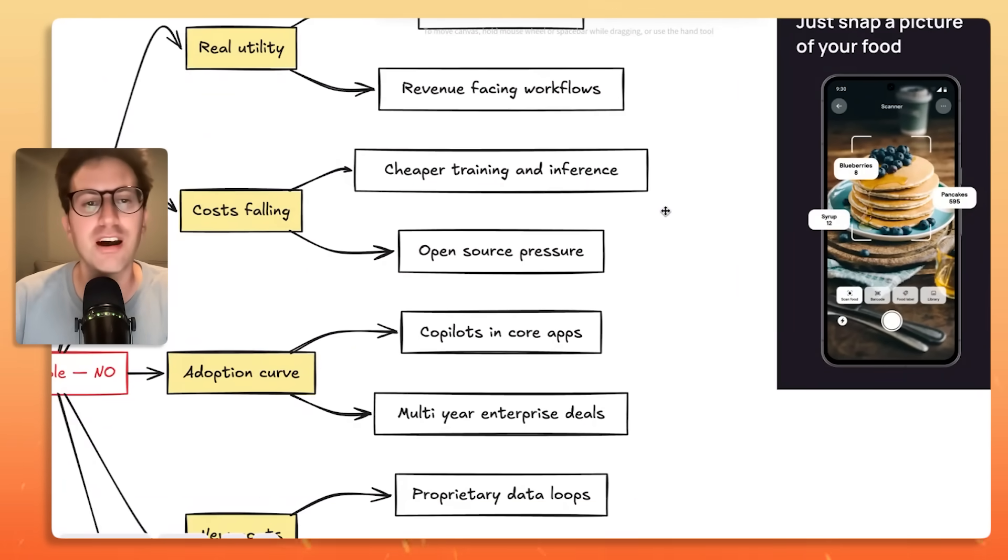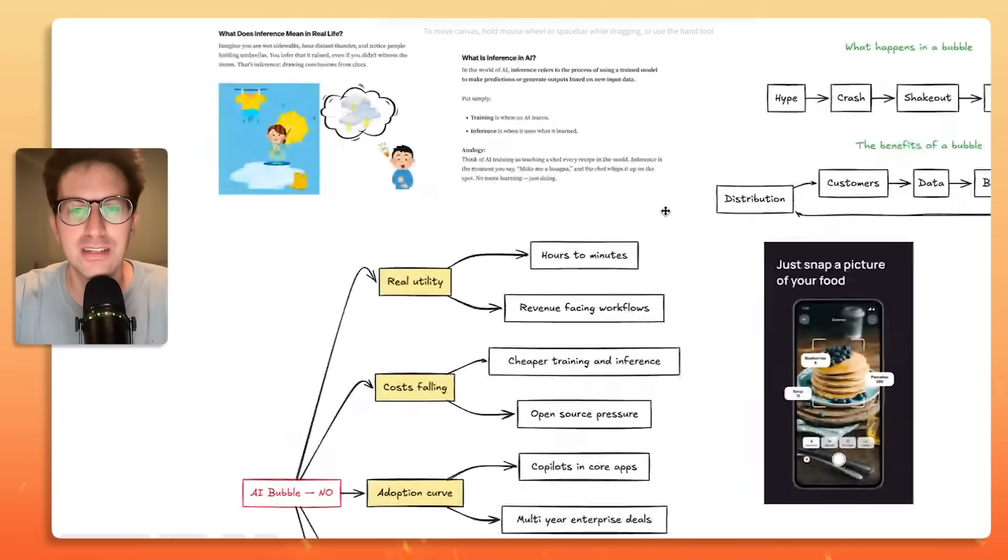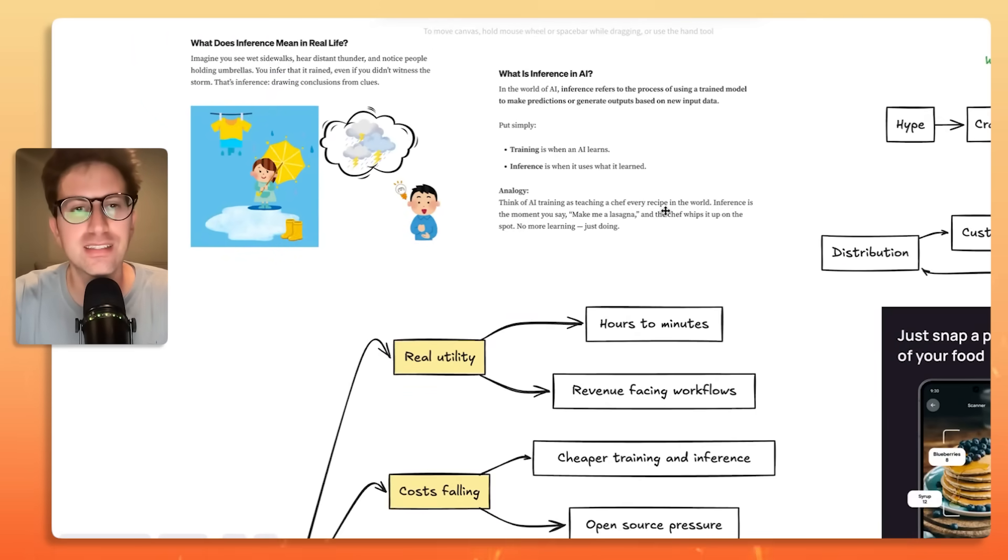Costs are, number two, costs are falling. So now it's cheaper training and inference and there's open source pressure. So the cost of basically building and maintaining these apps is going down. And a lot of people actually don't know what inference is. So I actually wanted to take a quick side quest to explain what inference is.